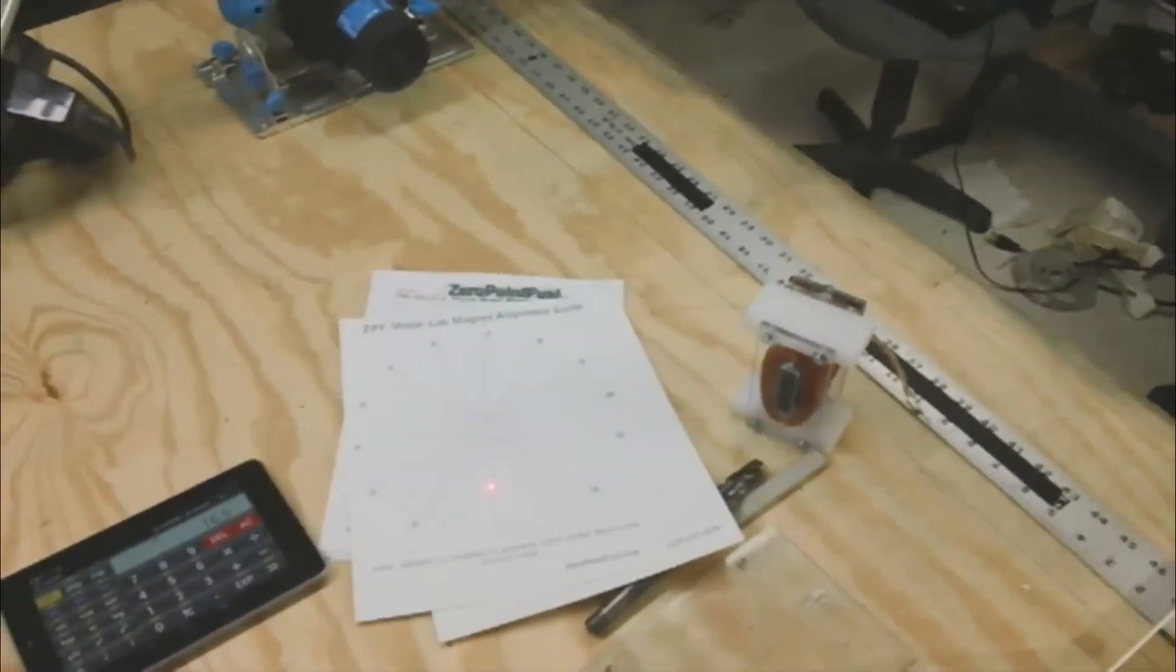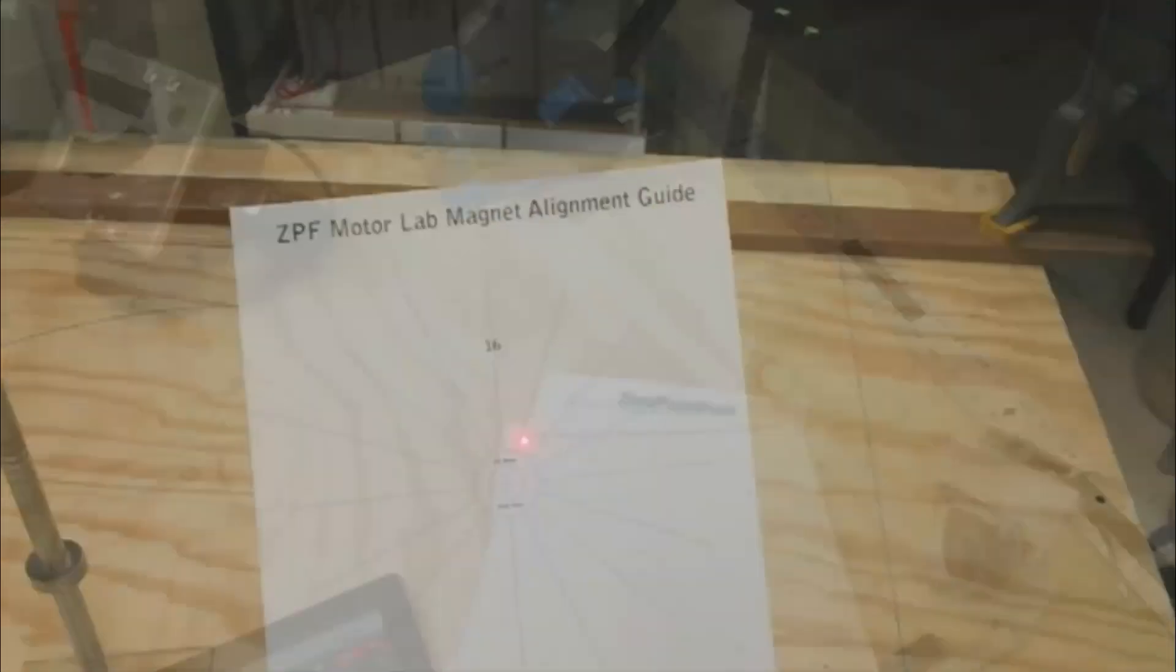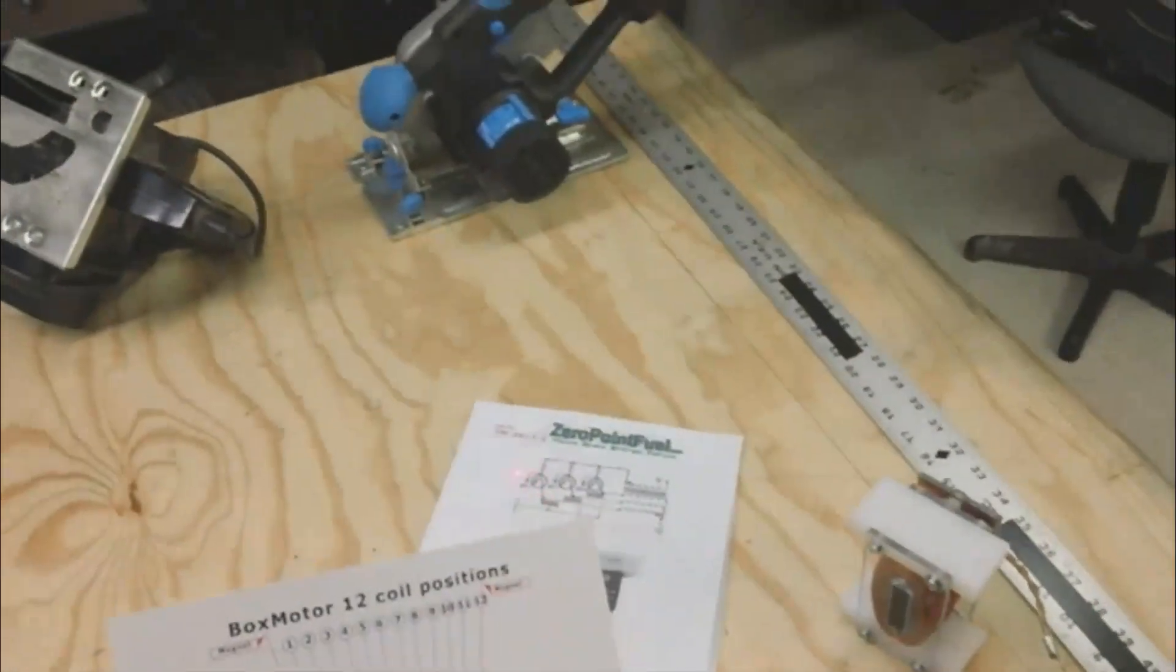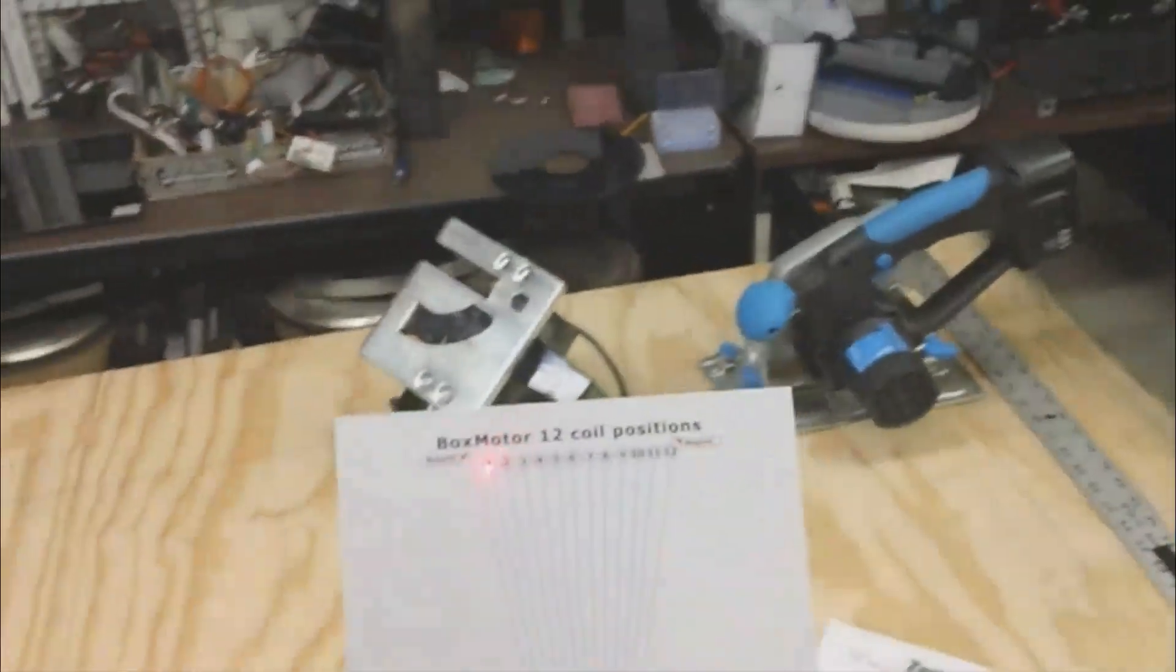But they'll be in the other book when they're done. I wanted to show you here what we're doing because you got 16 points around the wheel, and these are the possible positions between each one of those segments to give you a continuous push if you're using 12 coils.